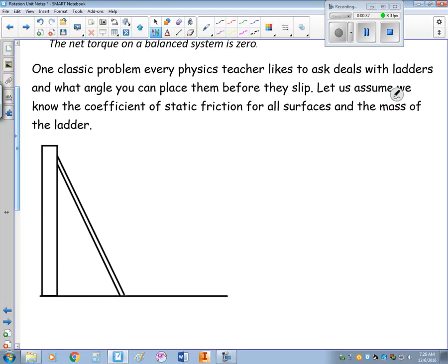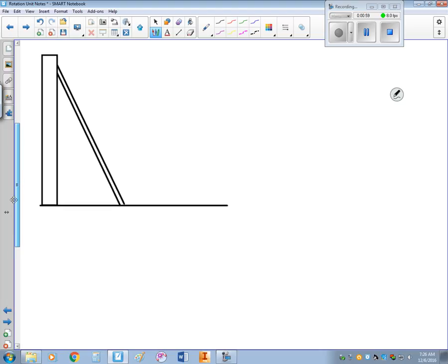So a classic problem that every physics teacher likes to ask is the ladder problem. This is a very old and classic problem. Basically, if you know the coefficients of static friction for all surfaces and the mass of the ladder, what angle can you prop it against the wall so that it stays put and doesn't slide off? Settle in, this is a very long and complex problem, but it's one that's important to see.